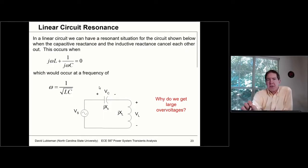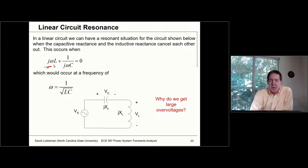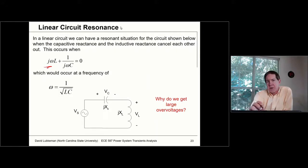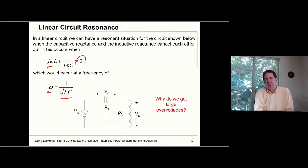Here's a linear circuit where we have circuit resonance occurring. The impedance of the transformer is given by j omega times L. The impedance of the capacitance is given by one over j omega C. Resonance occurs in this particular situation, if there's no resistance, where these two impedances add up to zero. And the frequency at which it occurs is given by one over the square root of LC.